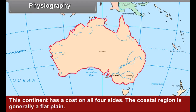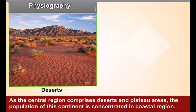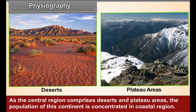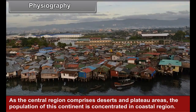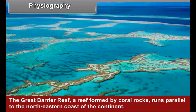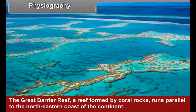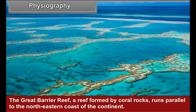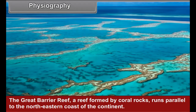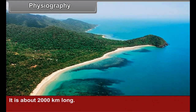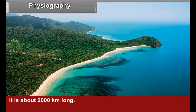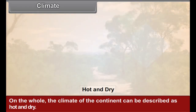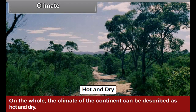This continent has a coast on all four sides. The coastal region is generally a flat plain. As the central region comprises deserts and plateau areas, the population of this continent is concentrated in the coastal region. The Great Barrier Reef, a reef formed by coral rocks, runs parallel to the northeastern coast of the continent and is about two thousand kilometers long.